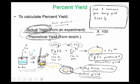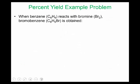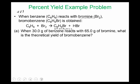Let's try a quick problem. This is actually number 83 in your textbook. Benzene (C6H6) reacts with bromine (Br2) and you get bromobenzene (C6H5Br). You have 30 grams of benzene and it reacts with 65 grams of bromine. What's the theoretical yield of bromobenzene?